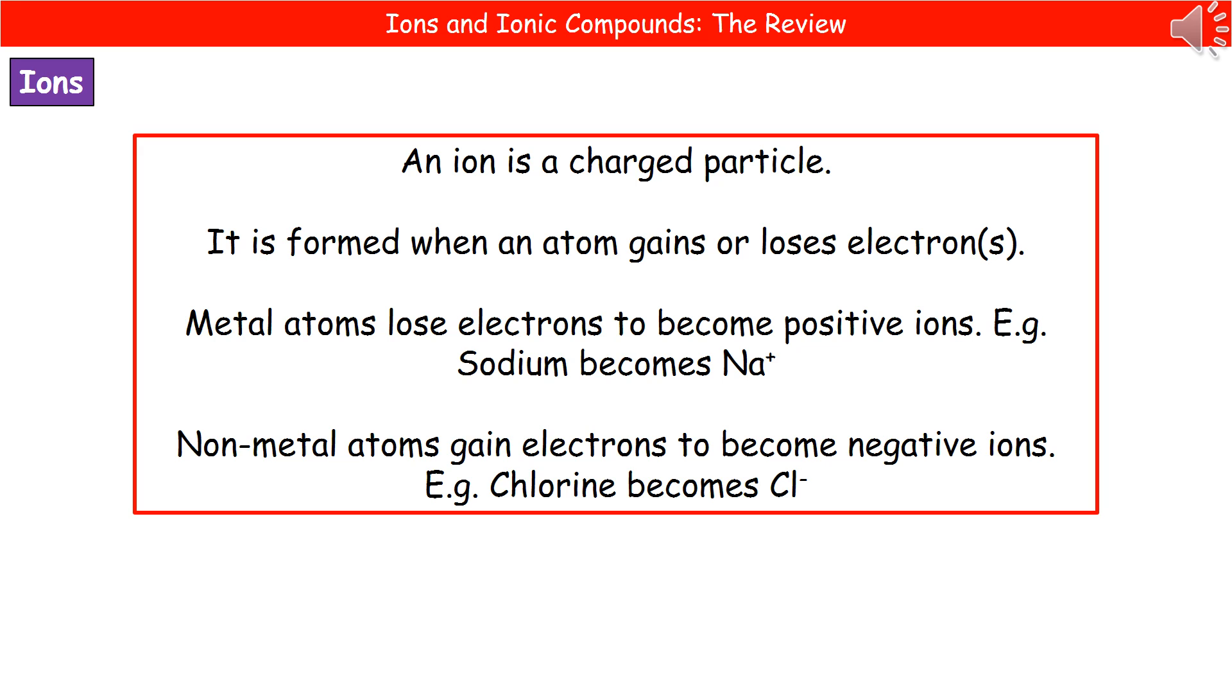So an ion, if you remember, is a charged particle. Ions will form when we either gain or lose electrons from an atom. Metal atoms will lose electrons and therefore become positive ions. For example, sodium will become Na+ because it loses one electron. And non-metal atoms will gain electrons to become negative ions. So chlorine becomes Cl- because it gains one electron.